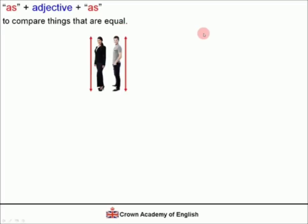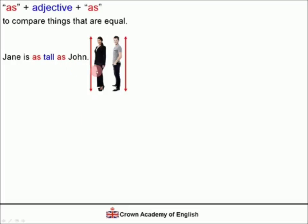Example: Jane is as tall as John. So this is Jane and this is John, and they are the same height. Jane is as tall as John.